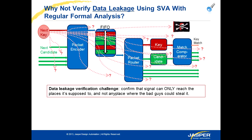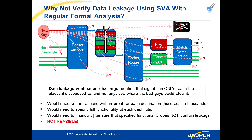We're going to use Jasper's tools to verify this design and make sure there are no security issues. First, let's do a leakage check. Leakage verification ensures that secure data never leaks to undesired locations. We could do this check with standard formal — for example, by writing one separate assertion for each path from the secure data to all of the top-level signals in the design. But using standard formal that would be error prone and would not detect timing violations from the key to the green signals. So that approach is not feasible.